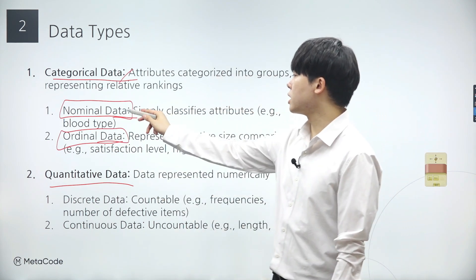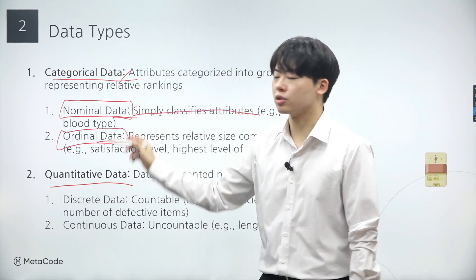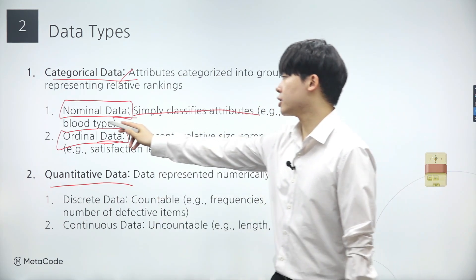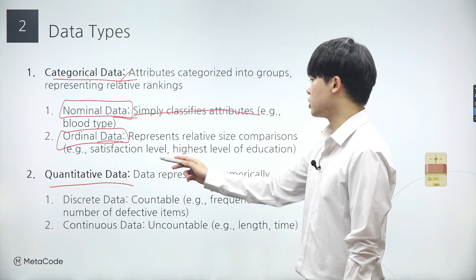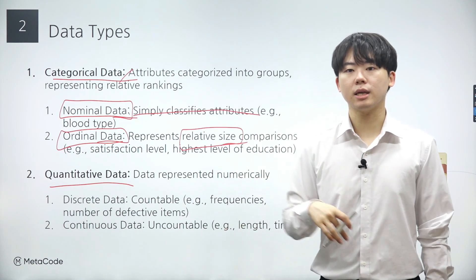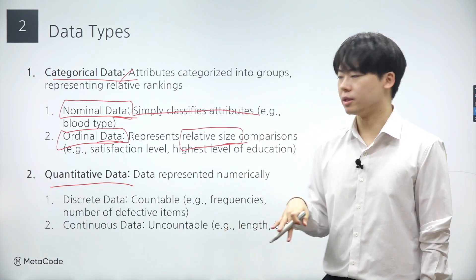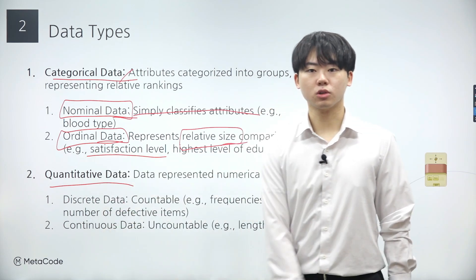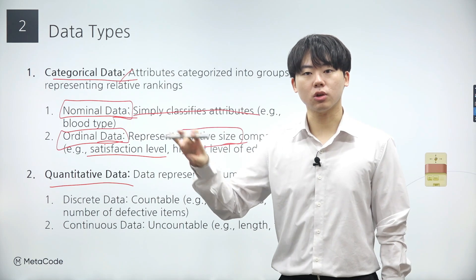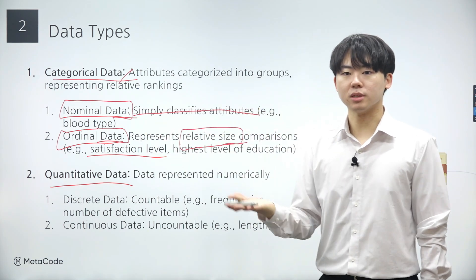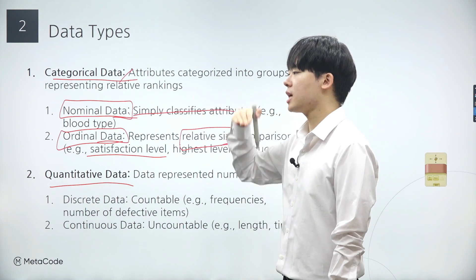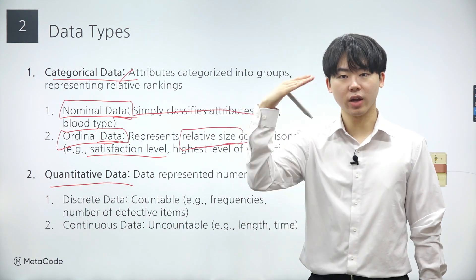To distinguish between these data types, we further categorize categorical data into two subtypes: nominal data and ordinal data. Nominal data is a type of categorical data that represents categories or groups without any inherent order, ranking, or numerical significance. Ordinal data, on the other hand, is a type of categorical data that represents categories with a natural order or ranking — data such as satisfaction level that have a relative size that can be compared with other values. Unlike nominal data, ordinal data provide information about the relative magnitude or order of the categories.